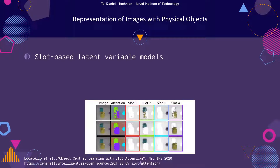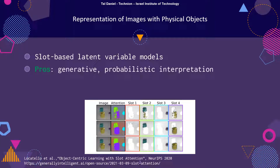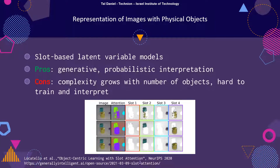Slot-based models decompose the scene into a predefined number of slots, where slots correspond to objects. This popular approach is naturally generative and allows for probabilistic interpretation. However, it might get difficult to train on scenes with varying numbers of objects, and it is unclear how each slot integrates in the original scene. Moreover, due to its iterative nature, it gets more complex to train when there are many objects and a lot of slots are required.